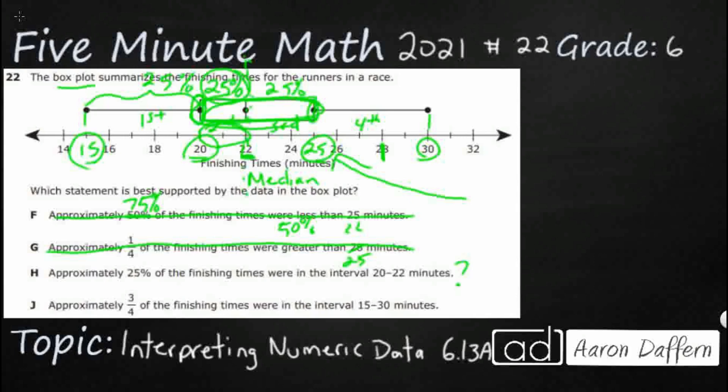Three quarters of the finishing times were in the interval 15 to 30. So here's my 15 and here's my 30. No, that's the whole thing. That needs to be four fourths or 100%. So that is incorrect. My answer is H.